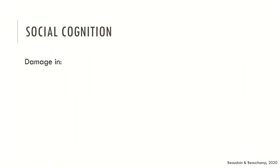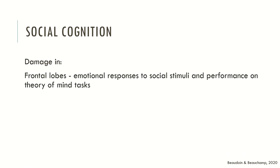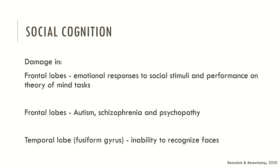Social cognition impairments can be attributable to lesions in brain structures, particularly the frontal lobes, which affect emotional responses to social stimuli and performance on theory of mind tasks. Impairments in frontal lobes tend to be described in people with autism, schizophrenia and psychopathy. Lesions in the temporal lobe, specifically in the fusiform gyrus, tend to produce an inability to recognize faces.